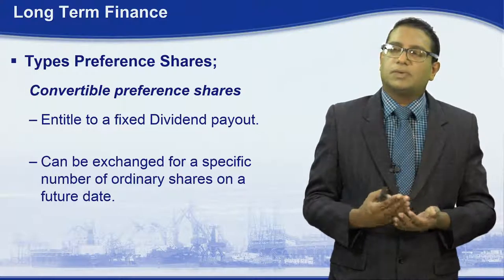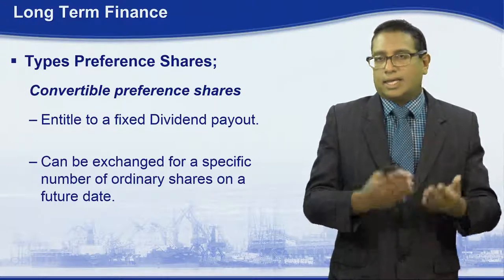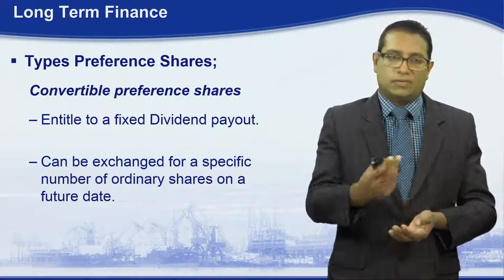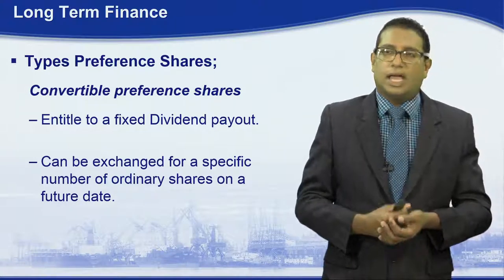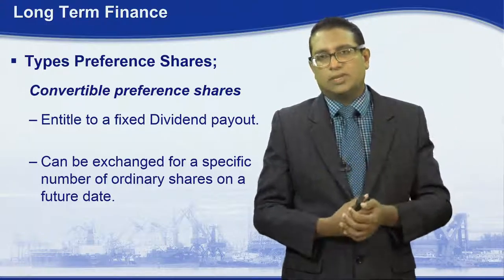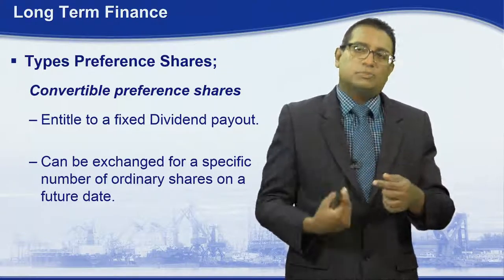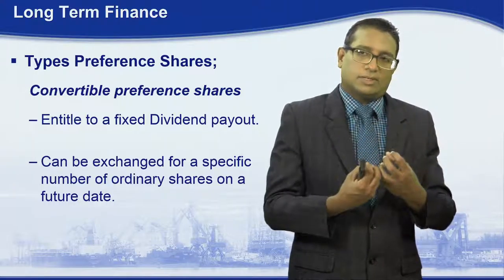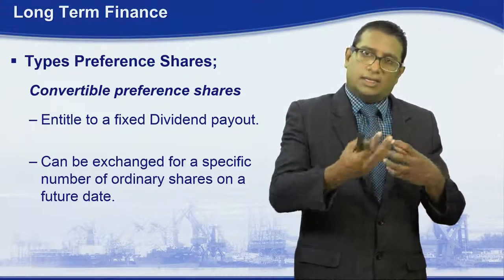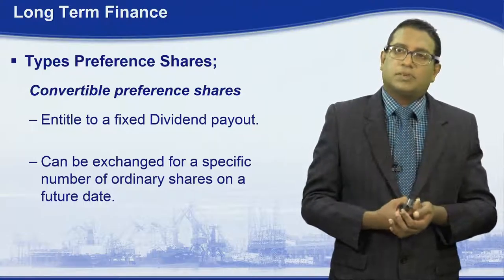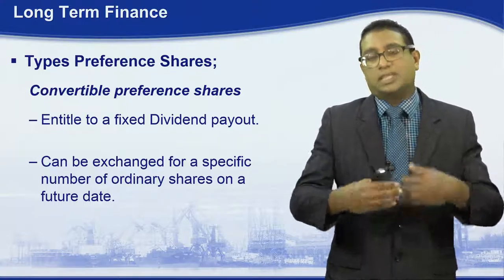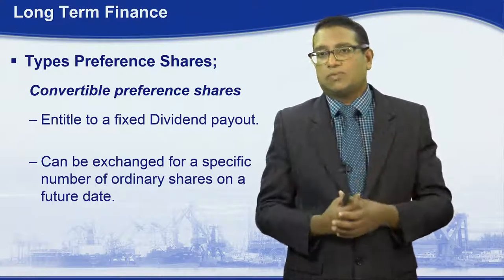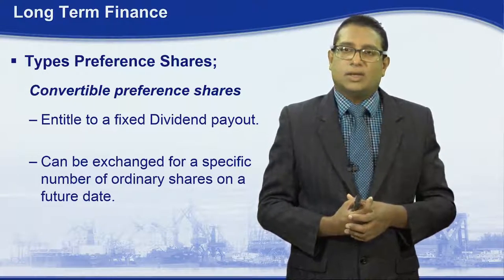The convertible preference shareholder will get a fixed amount of dividend as a percentage of the share value. What is more important is that these convertible preference shares can be exchanged for a specific number of ordinary shares on a future date.